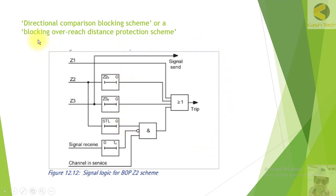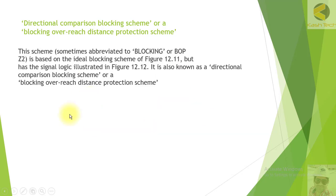The modified scheme is called the directional comparison blocking scheme, or blocking overreaching distance protection scheme. It is the same as previously discussed, except it also takes the channel-in-service input. If the channel is in service, the permissive scheme allows immediate tripping. If the channel is not healthy and no blocking signal is received, tripping is not possible. This scheme is sometimes abbreviated as BOP, and zone 2 is based on the ideal blocking scheme.